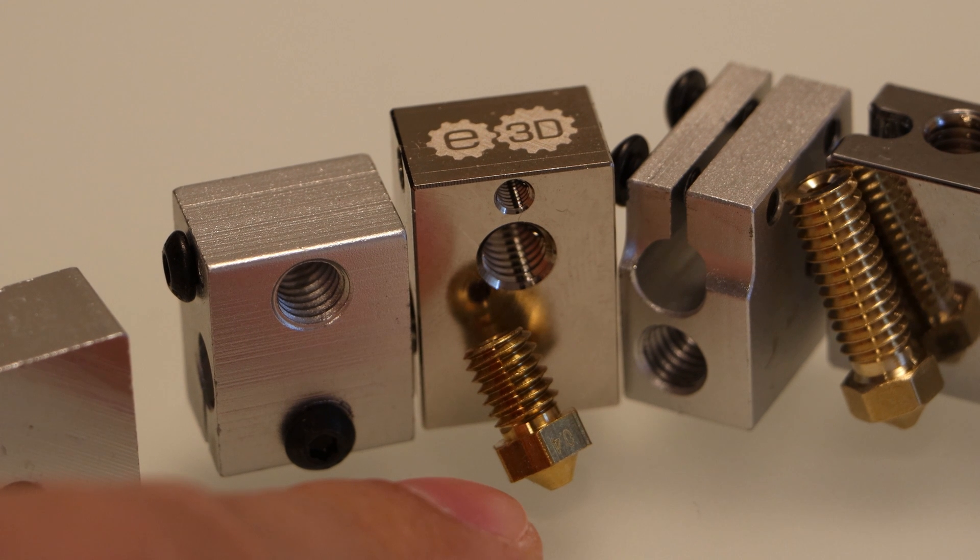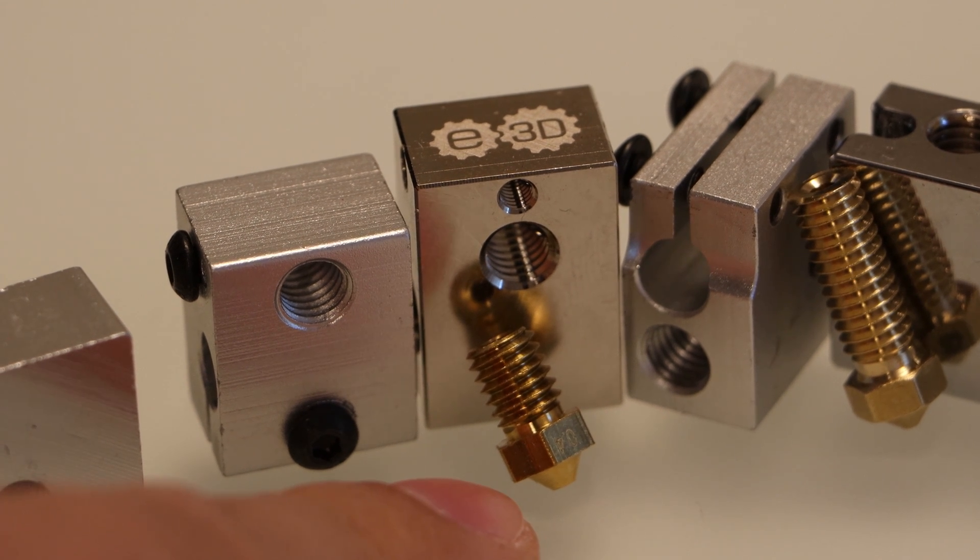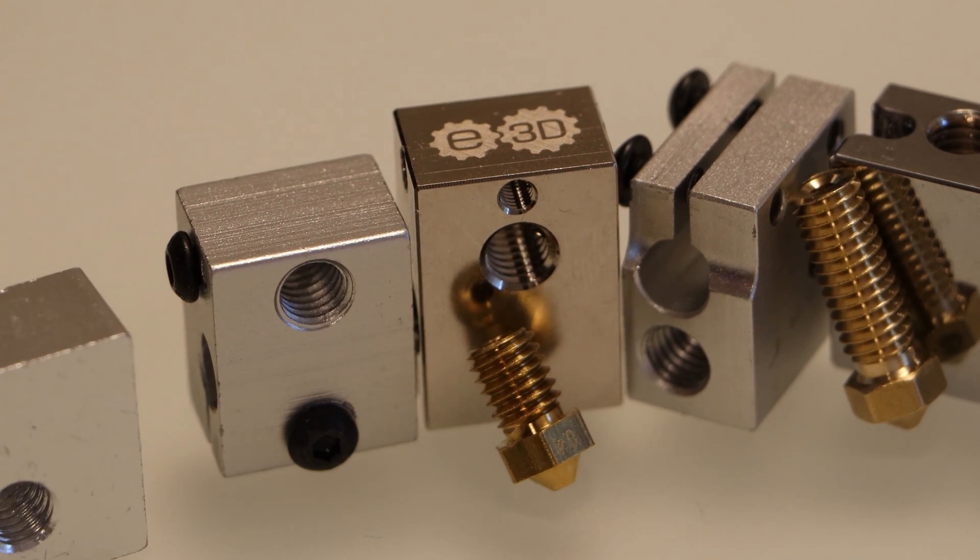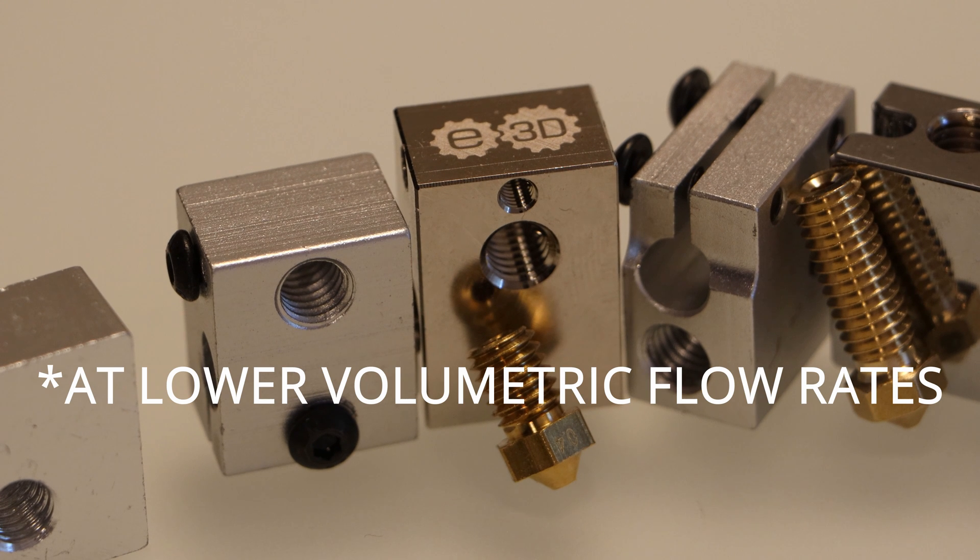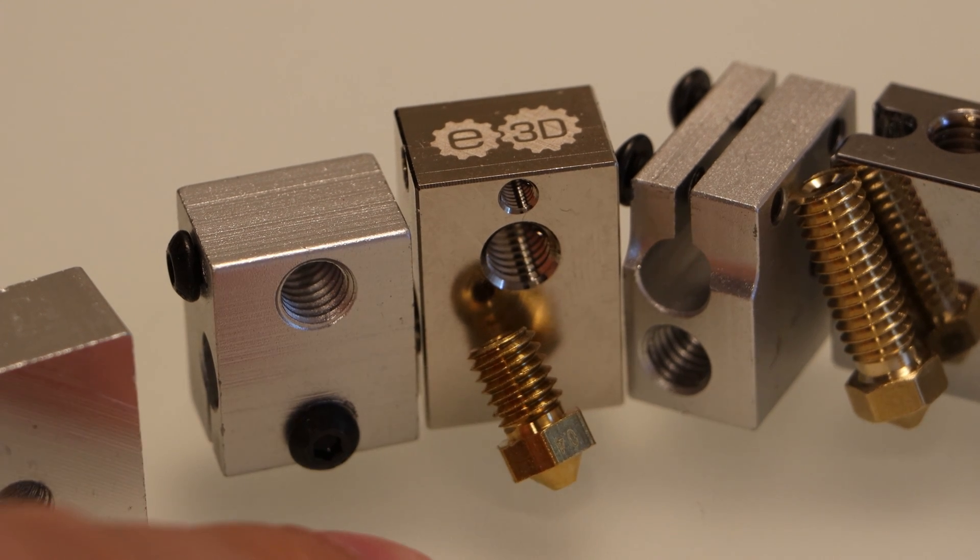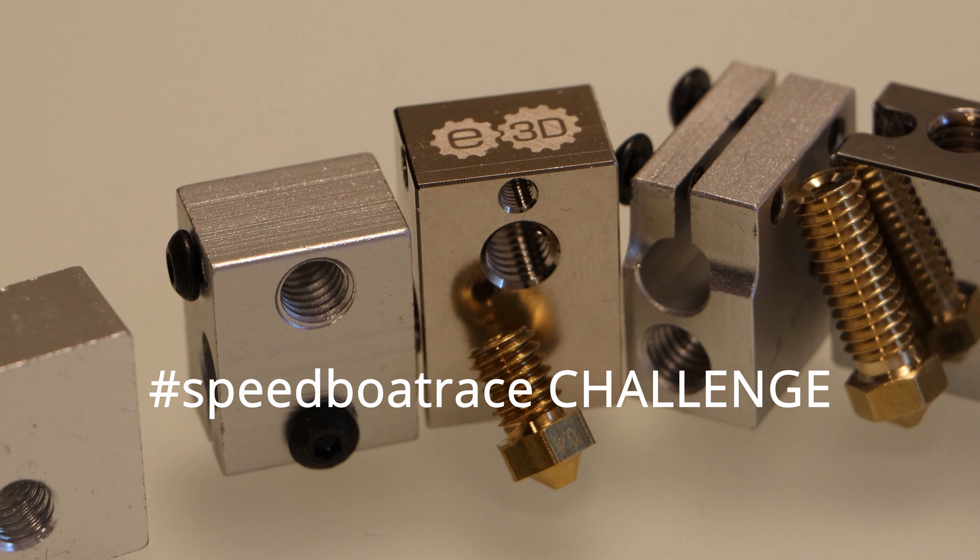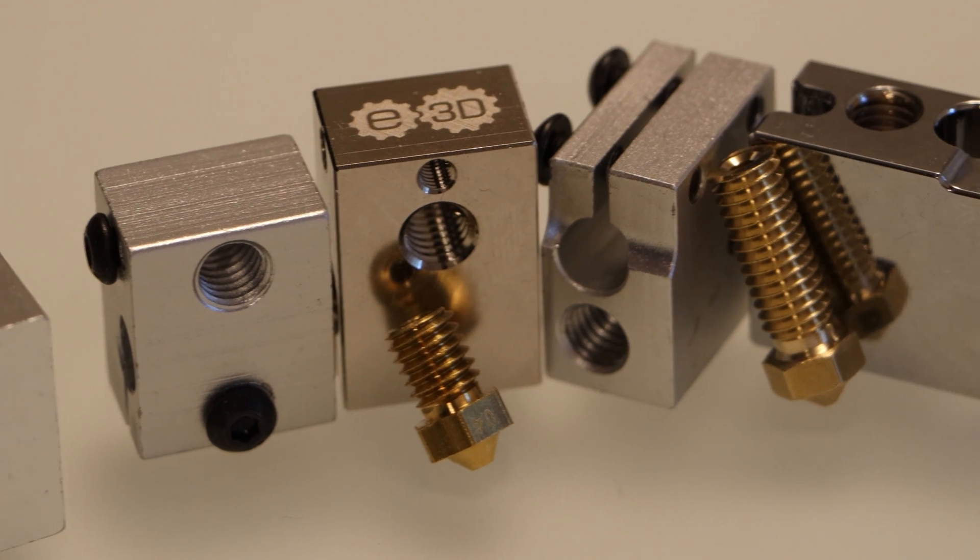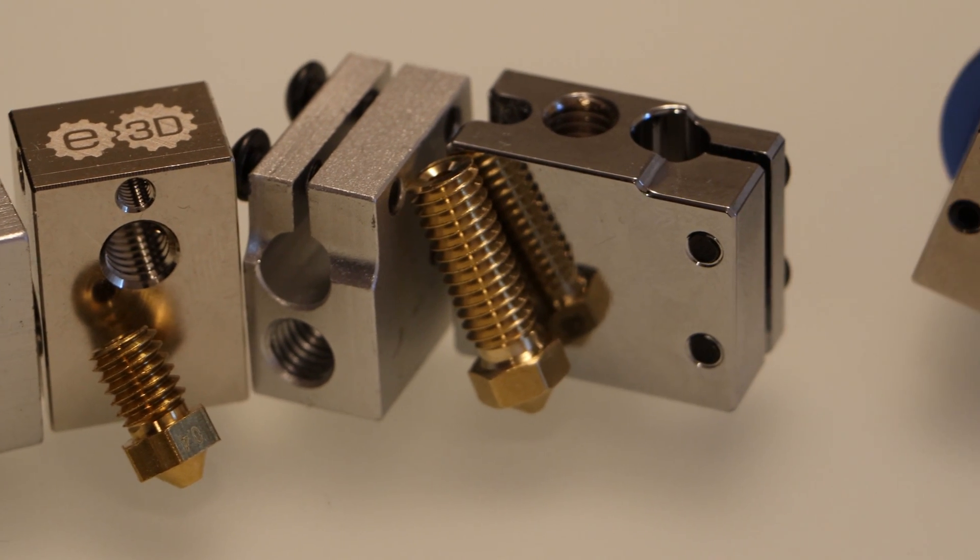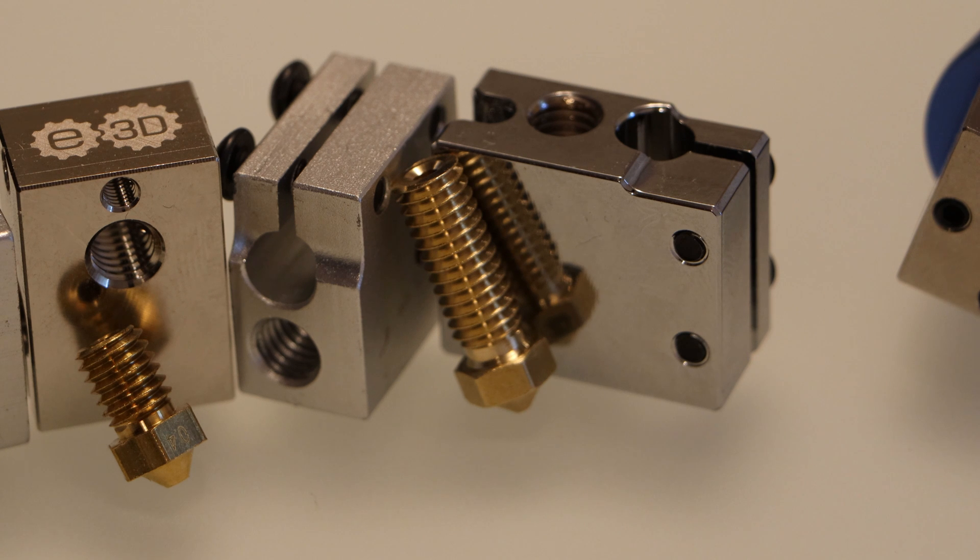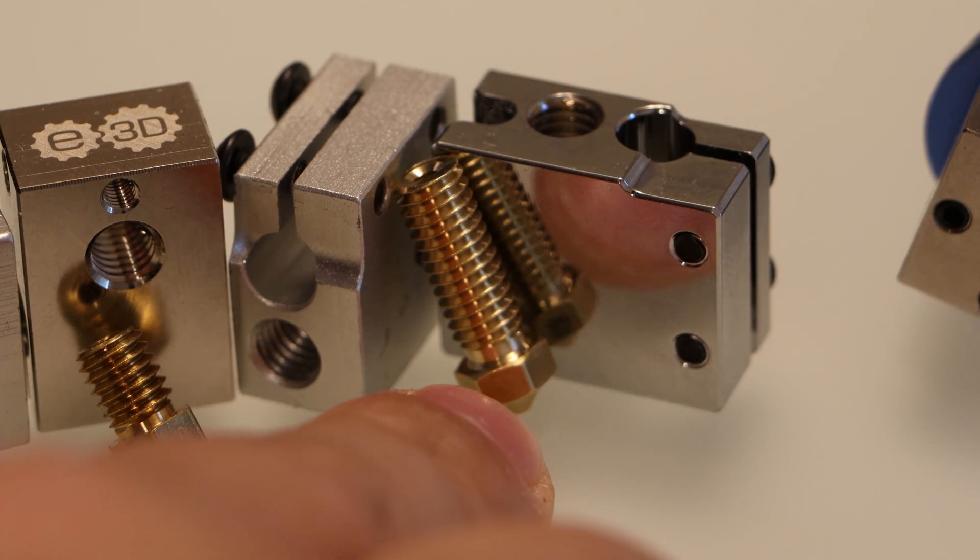A standard hotend uses one of these shorter nozzles that has a shorter melt zone, and therefore it has better control over the amount of plastic you're putting down. If you're printing with a 0.4 millimeter nozzle, this setup is pretty much ideal, because you really can't put that much more plastic out of a 0.4 millimeter nozzle, unless you have some kind of crazy high-speed 3D printer. However, if you want to experiment with larger diameter nozzles and you want to print really fast, you might consider switching over to a volcano style hotend.